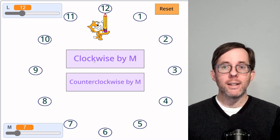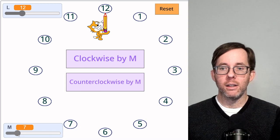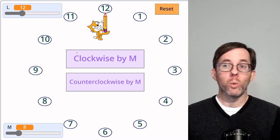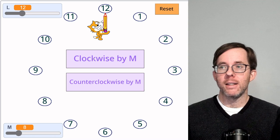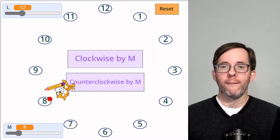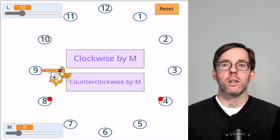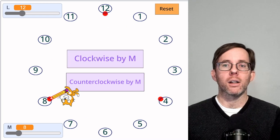But what if we set m to 8? So let's set it to 8 here. What's your prediction now? Will we get every time? Let's see, 8 o'clock, 4 o'clock, 12 o'clock, and back to 8 o'clock.